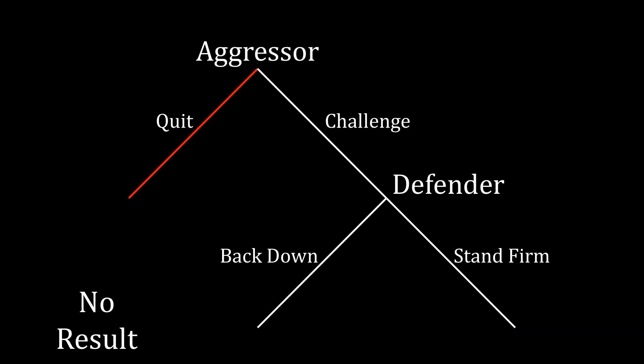A third possibility is that the aggressor just quits straight away, and we don't have any attempt at compellence at all. While this might not seem particularly pertinent to our discussion, the possibility that an aggressor might strategically choose to quit rather than challenge the status quo is critical for making inferences about what we observe empirically.